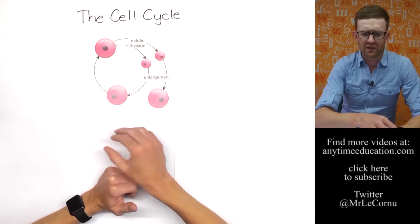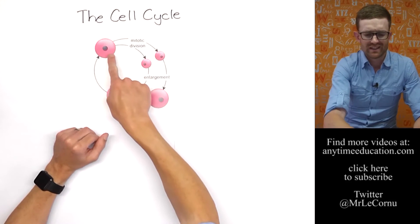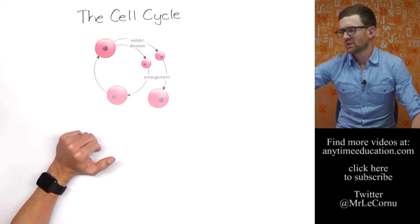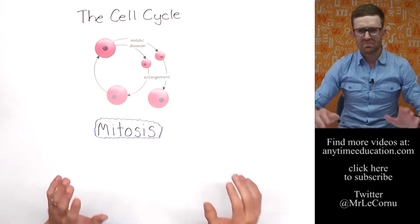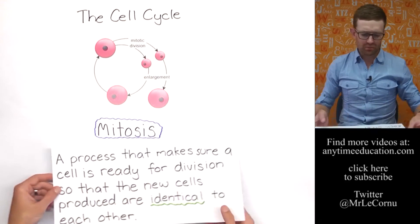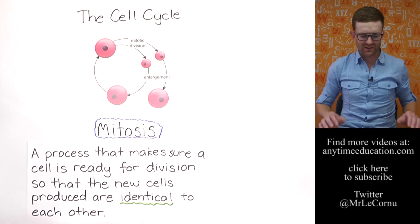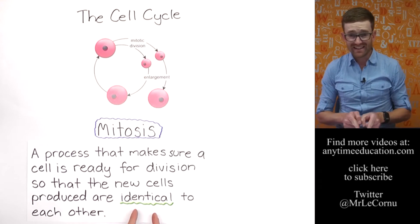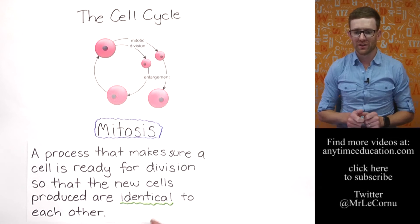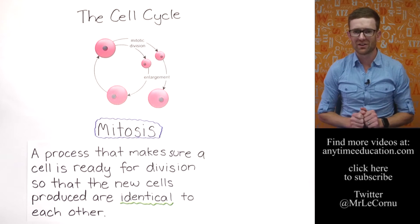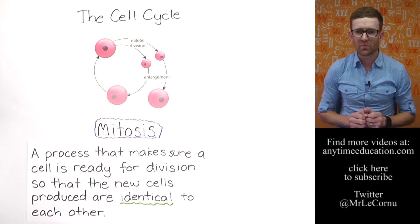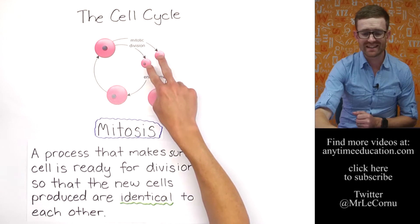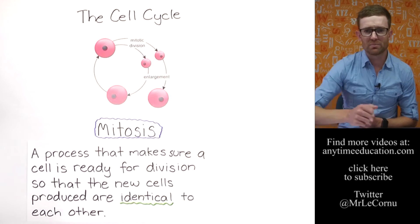So we'll keep the cell cycle in the picture here, and you can see here where the division is taking place. It's called mitotic division. Mitosis, basically, it's the process that makes sure a cell is ready for division so that the new cells produced are identical to each other. That is the key word there. As a result of mitosis, we want two new cells that are going to be genetically identical to the parent cell.